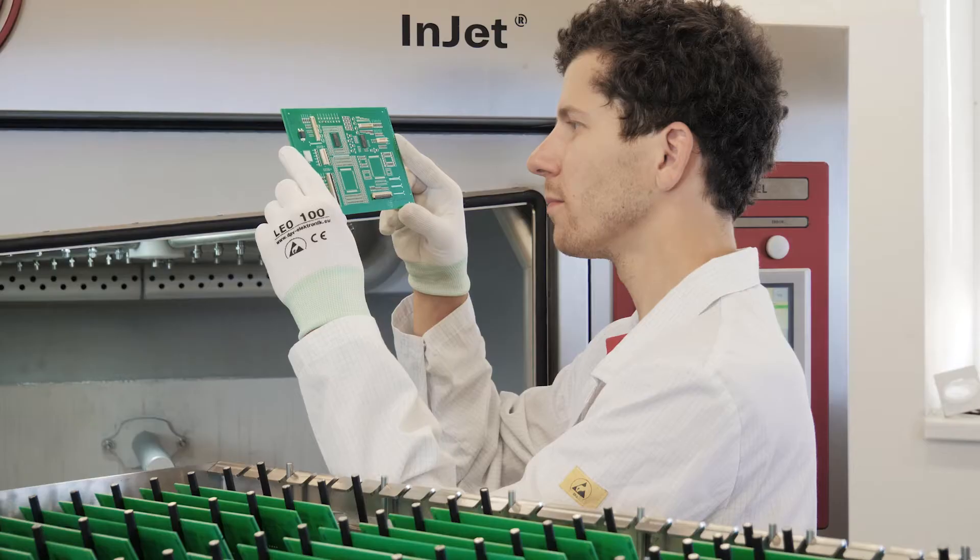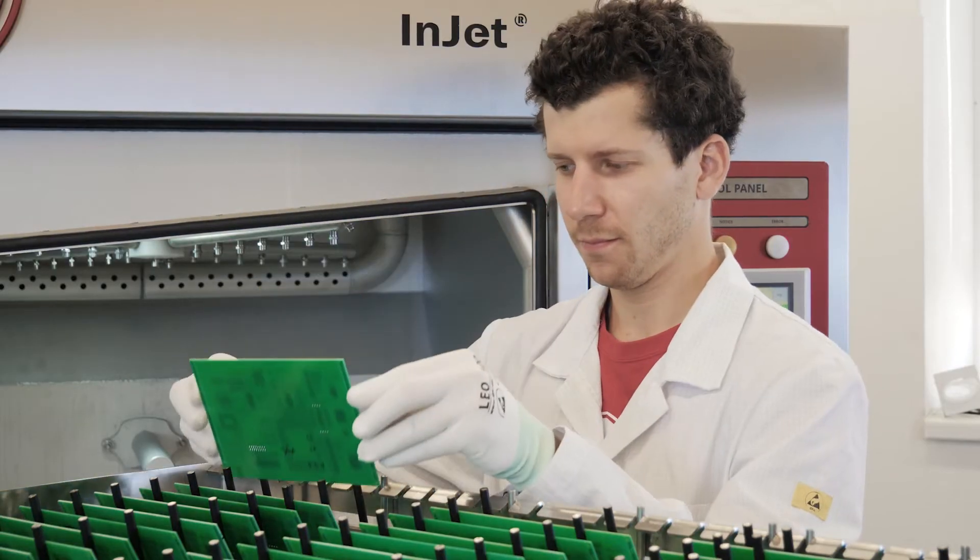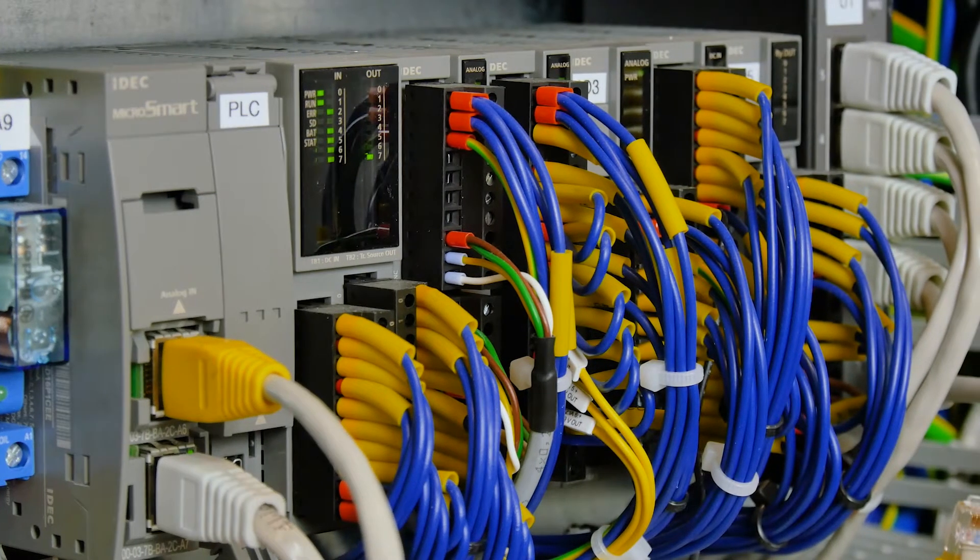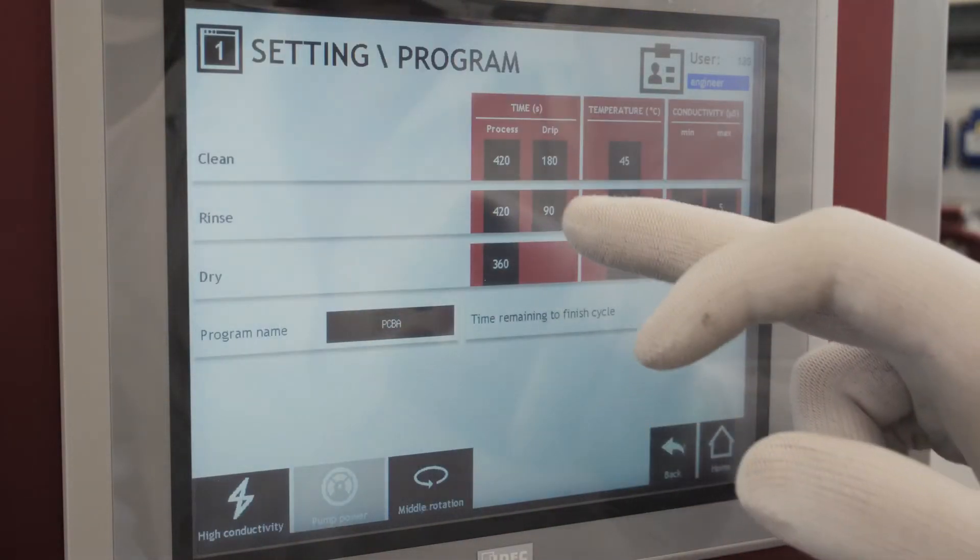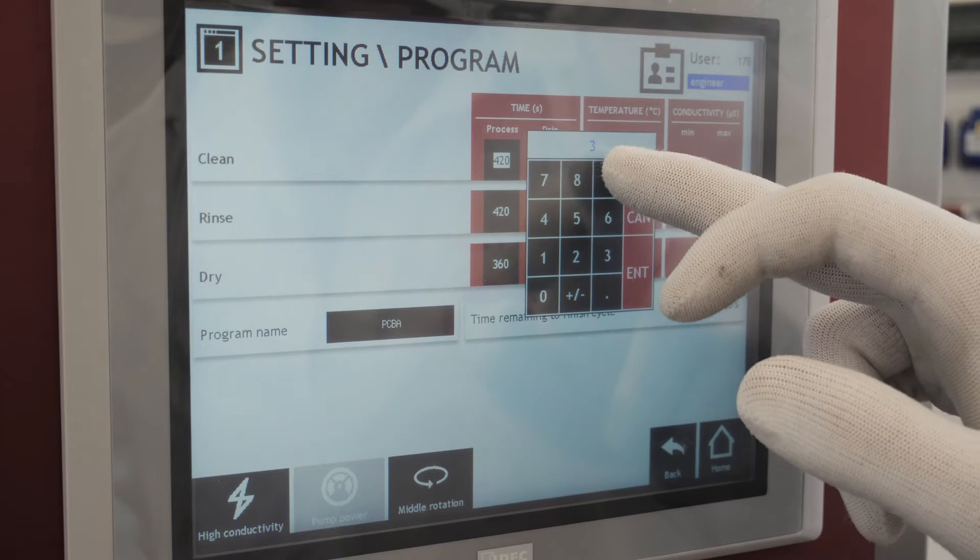The cleaning process is monitored and controlled by the PLC. All process parameters such as time, temperature, and other variables can be quickly adjusted on the touch screen.